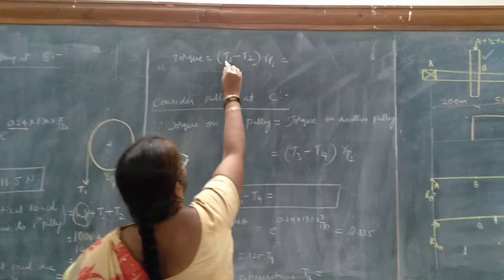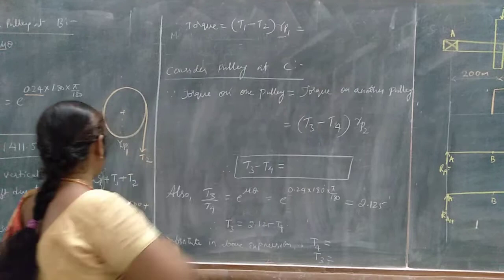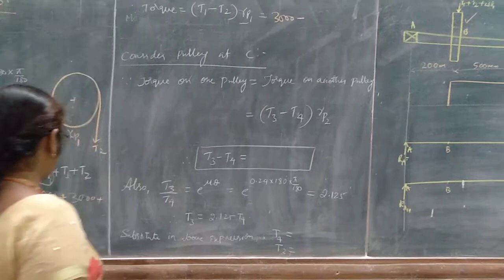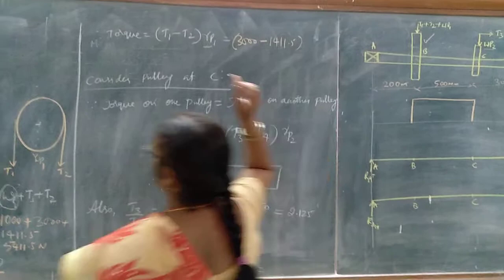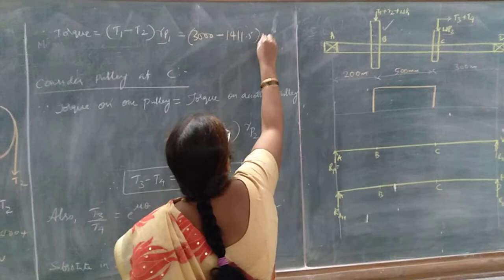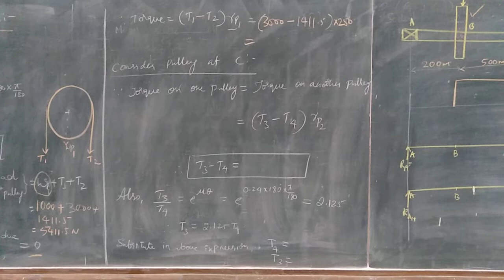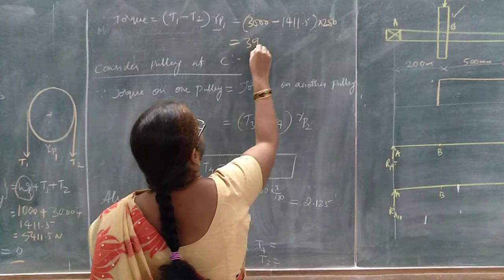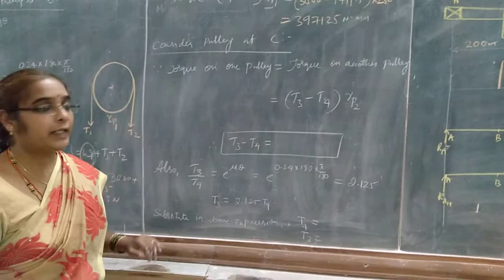Now let us calculate the torque. Torque is calculated as the difference in belt tension multiplied by the radius of the pulley: Torque = (T1 - T2) × radius. T1 is 3000 N, T2 is 1411.5 N, and the radius of the first pulley is 250 mm. Calculating this gives the torque on the shaft.